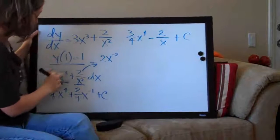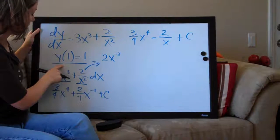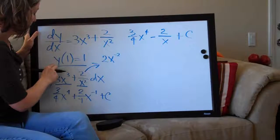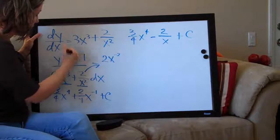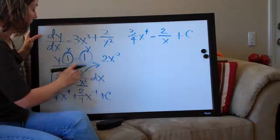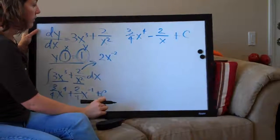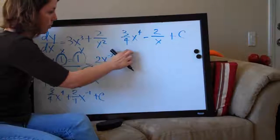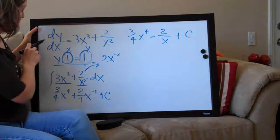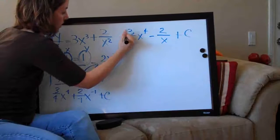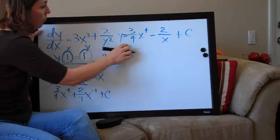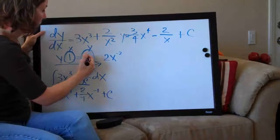Now we apply the initial condition y of 1 equals 1. When they give you an initial condition, you plug the x-value in for x and the y-value in for y. You may notice there's no y in the equation yet, but remember — because we started with dy over dx, the entire right-hand side is equal to y. So we put y on the left side and then plug 1 in for y.